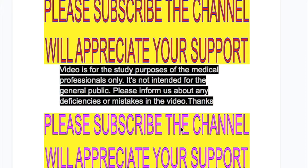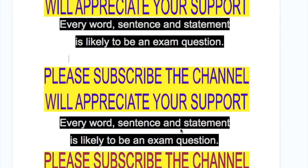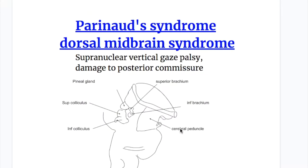In this video we'll discuss Parinaud syndrome, its causes, clinical features and the effects produced by a supranuclear palsy. Parinaud syndrome, also known as dorsal midbrain syndrome, is a supranuclear vertical palsy and is due to damage to the posterior commissure.